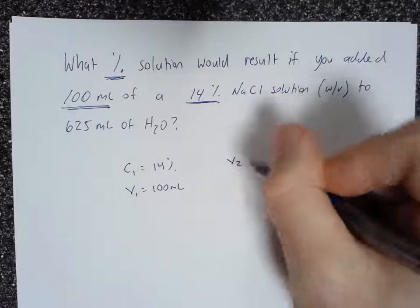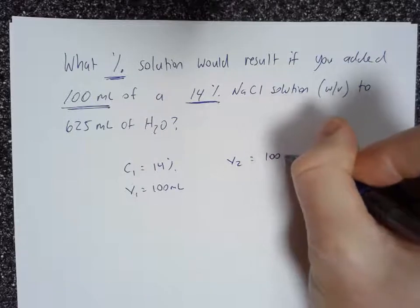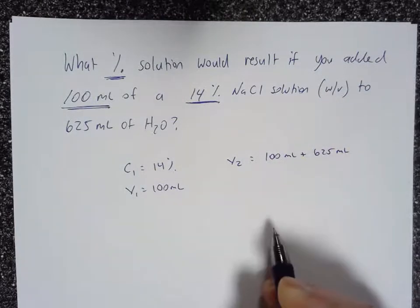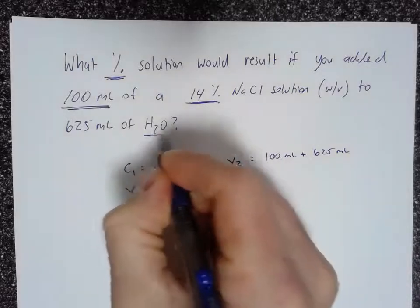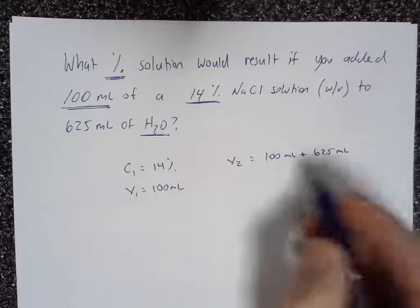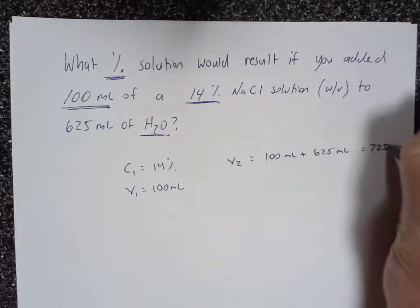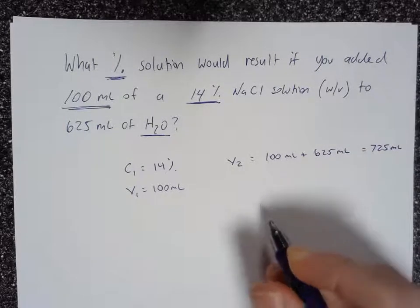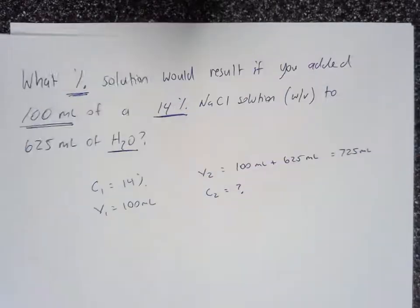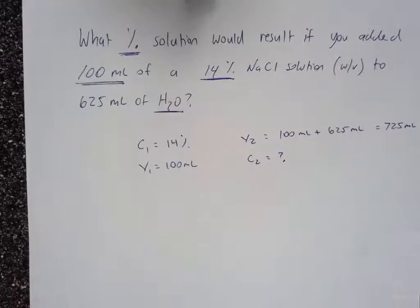V2 is 100 milliliters plus 625 milliliters. Because this is going to be water plus the stock. So you have to add those two together. So the final volume is 725 milliliters. And then C2 is the question mark. That is the unknown.